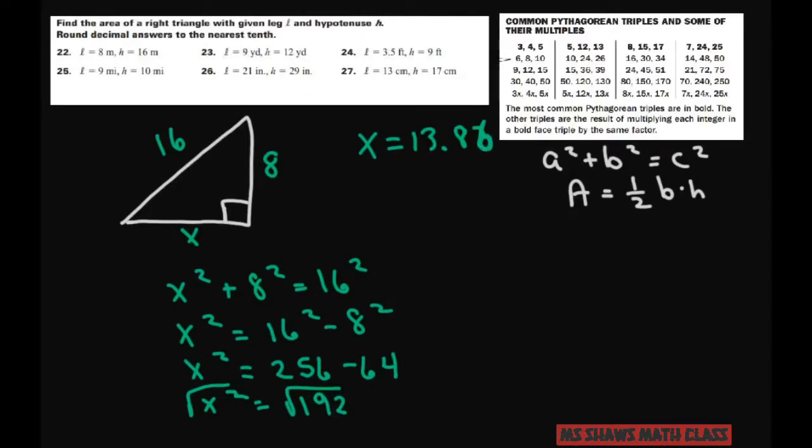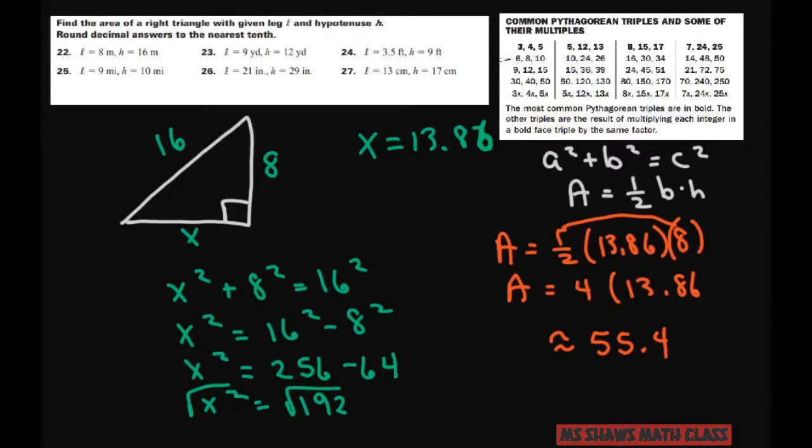So now we can do our area. Our area is ½ base, which is 13.86 times 8. So ½ goes into 8 four times. So this is going to be 4. I'm just multiplying those two. 4 times 13.86. So times 4. And that's going to give you approximately, we're rounding to the nearest tenth, 55.4. And that's going to be square meters.